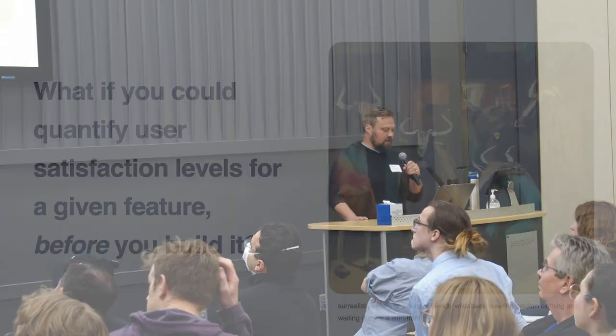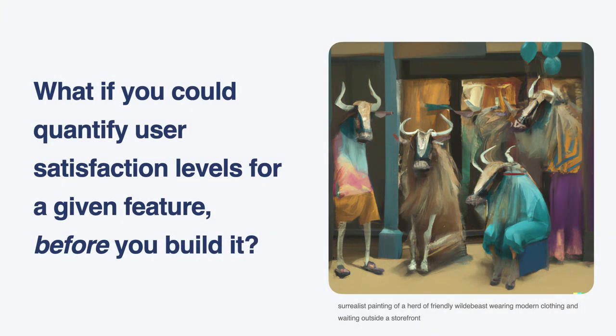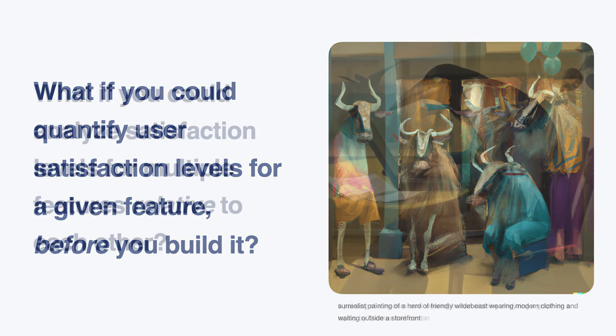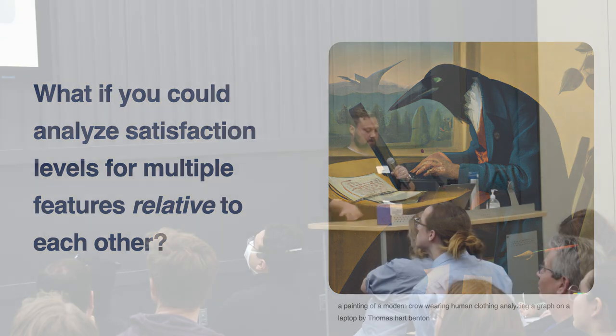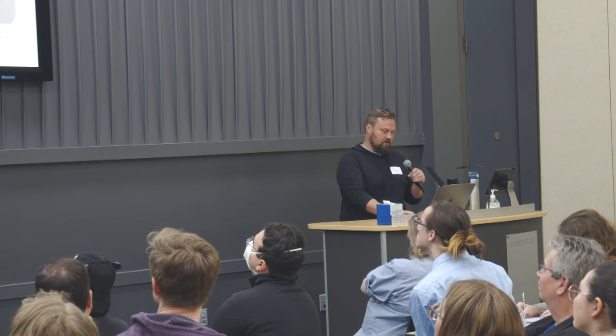What if we could quantify user satisfaction levels for a given feature before we even built it? What if we could analyze those satisfaction levels in a uniform way across multiple features at the same time, relative to each other? Those are some of the problems that the Kano method is particularly effective at solving.